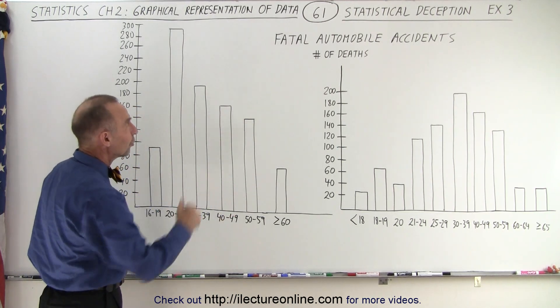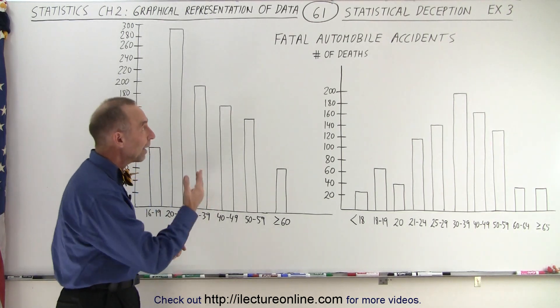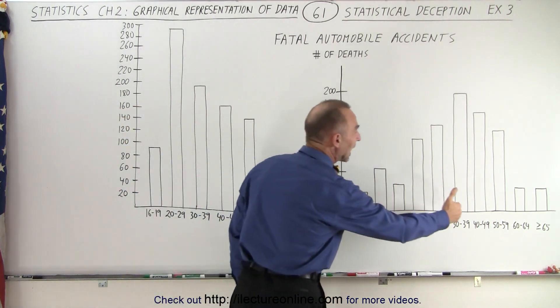For example, let's say the chart on the right shows you the number of deaths in a particular state by car accidents, and notice we've classified them according to the age of the driver.